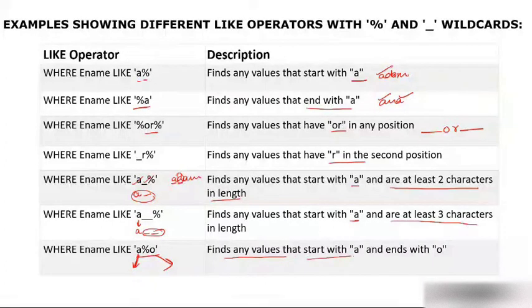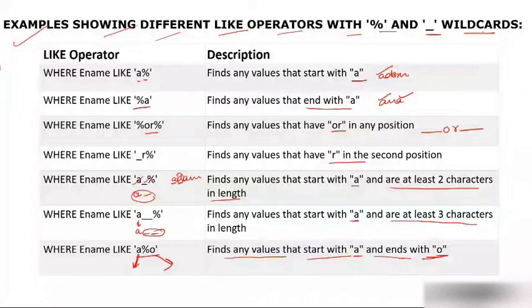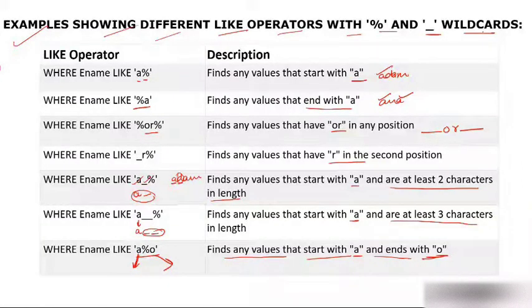These examples show different LIKE operators using percent and underscore wildcards. Always remember: the percent wildcard (%) is for zero, one, or multiple characters, while the underscore wildcard (_) is only for a single character.